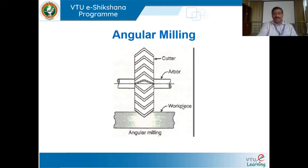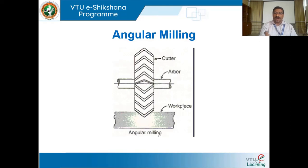Angular milling can produce different profiles. We can cut dovetail grooves, and there are different types of keyways — rectangular, square, or dovetail. If you recall in a lathe, the cross slide sits on the saddle and moves in a transverse direction perpendicular to the lathe axis, because of dovetail guideways beneath the cross slide. Dovetail guideways can be easily machined using the angular milling cutter.